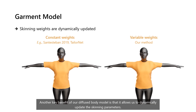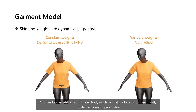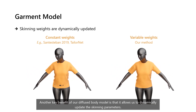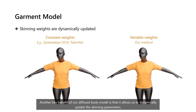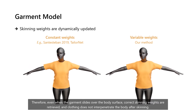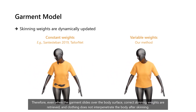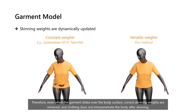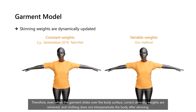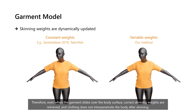Another key benefit of our diffuse body model is that it allows us to dynamically update skinning parameters. Therefore, even when the garment slides over the body surface, correct skinning weights are retrieved, and clothing does not interpenetrate the body after skinning.